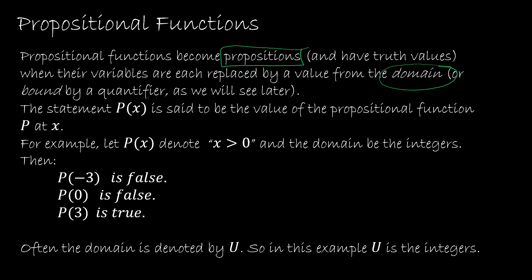So if I have p(x), that is a propositional function. It's not a proposition unless I give you a value. For example, if p(x) denotes x is greater than 0, then p(-3) means negative three is greater than zero, which is false. p(0) would be zero is greater than zero, which is false. p(3) would be three is greater than zero, which is true.